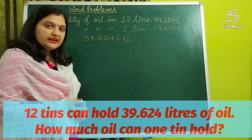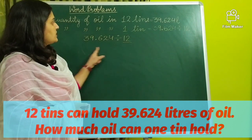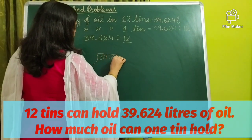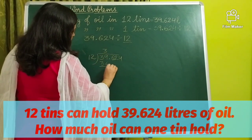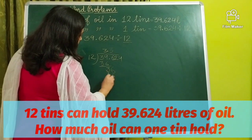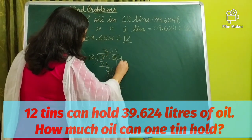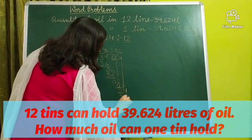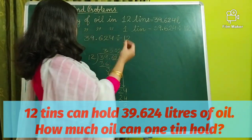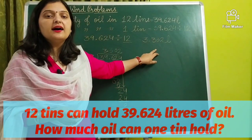Now we have to divide 39.624 by 12. Here our divisor is 12, which is a whole number. Whenever we have a whole number as a divisor, we always use the long division method. Doing long division: 12 × 3 = 36, subtract to get 3, decimal shifts to quotient, bring down 2, 12 × 0 = 0, bring down 4, 12 × 2 = 24. So the quantity of oil in one tin is equal to 3.302 liters.